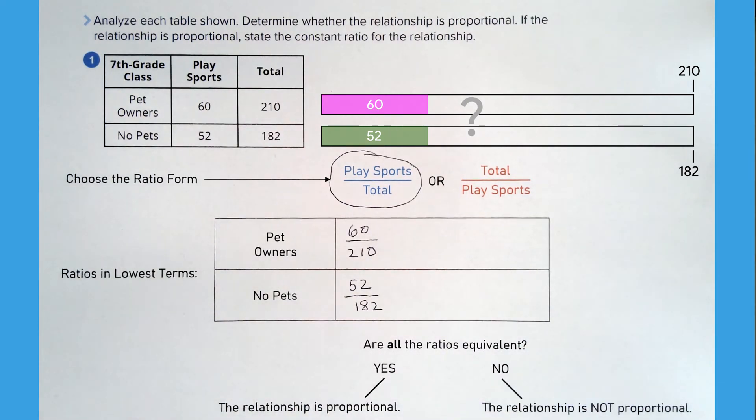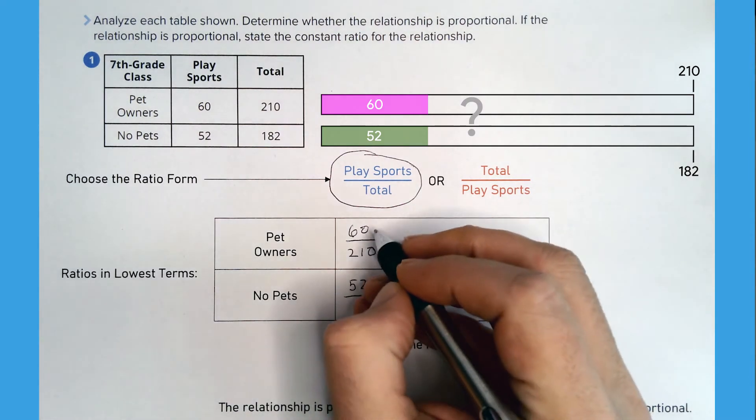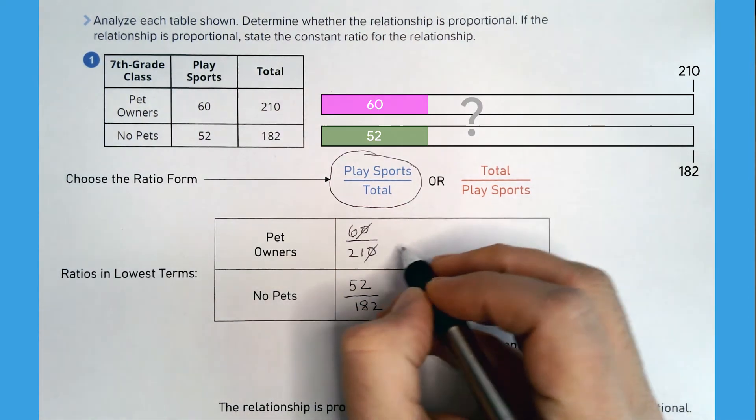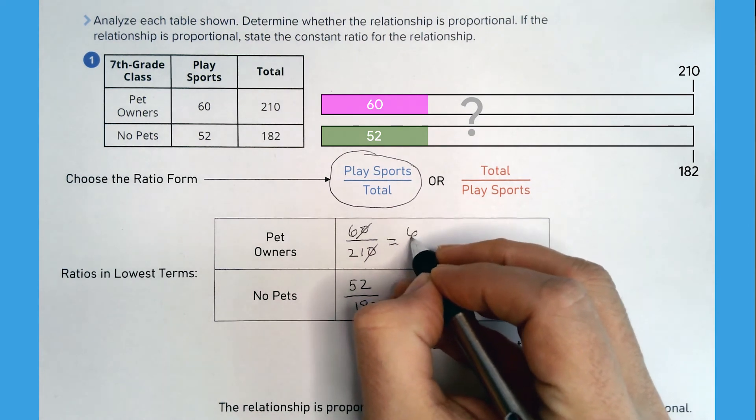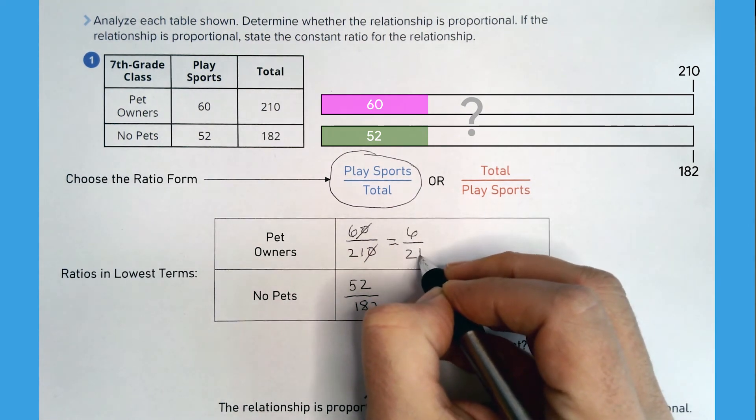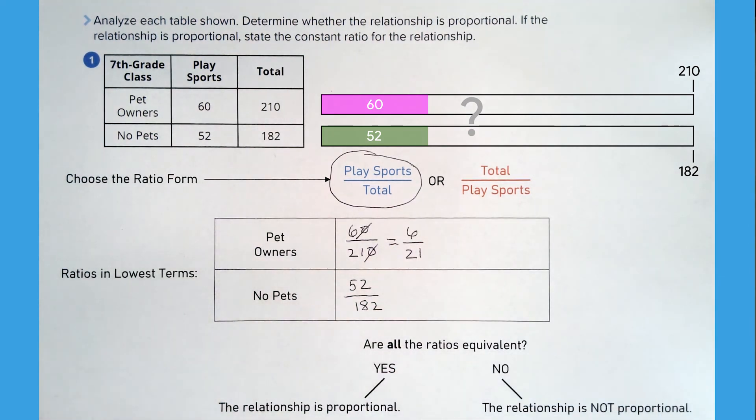Next, write the ratios in lowest terms. I can divide 60 and 210 by 10 to get 6 over 21. Then I can divide both numerator and denominator by 3 to get 2 over 7.